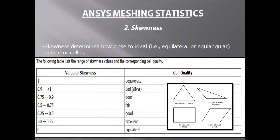Today we will discuss the second important element of ANSYS meshing statistics, that is skewness. We will discuss what skewness is and how we can improve the skewness of an element or our meshing. Skewness determines how close to ideal a face or cell is. When we perform meshing on a part, ANSYS meshing considers the cells or faces to be ideal — meaning a triangle should be equilateral or a quadrilateral should be equiangular. But due to complex geometry, sometimes it is not possible for the mesher to achieve this.